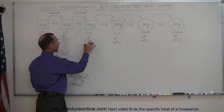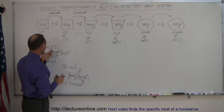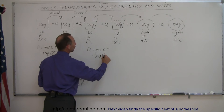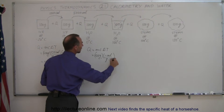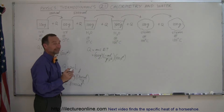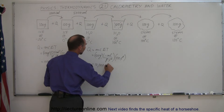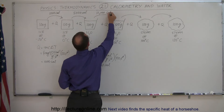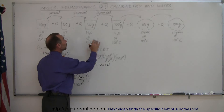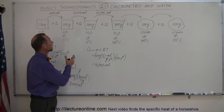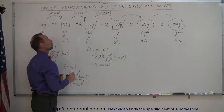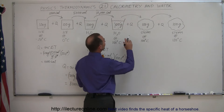Once the ice has melted into water, to bring it from 0°C to 100°C we again use Q = mcΔT. The mass is still 100 grams, c for water is 1 calorie per gram per °C, and ΔT is 100°C. This gives 10,000 calories. It's interesting — it takes 8000 calories to melt 100 grams of ice, and nearly the same amount, 10,000 calories, to bring that water all the way to boiling.